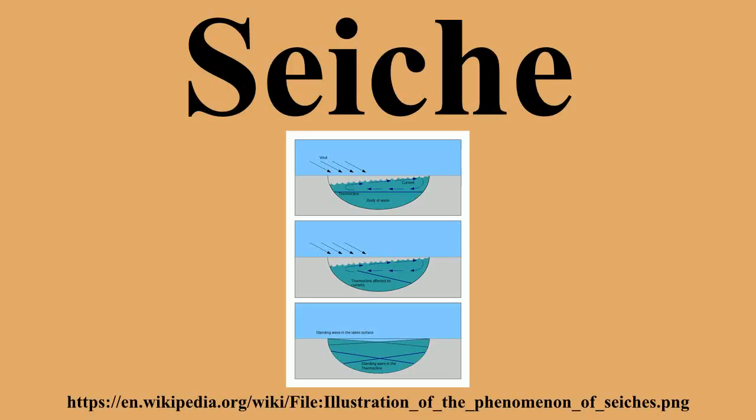A seiche is a standing wave in an enclosed or partially enclosed body of water. Seiches and seiche-related phenomena have been observed on lakes, reservoirs, swimming pools, bays, harbors, and seas.